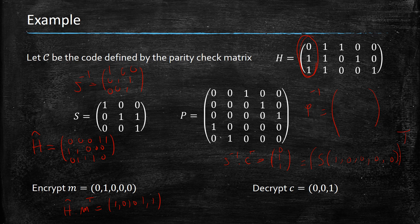We know this is the syndrome of the vector [1, 0, 0, 0, 0]. So decoding gives us the vector [1, 0, 0, 0, 0], which we then multiply by P-inverse. We calculate P-inverse times [1, 0, 0, 0, 0], and that gives us our message: [0, 0, 1, 0, 0]. That concludes the decryption of the ciphertext, and that's it.